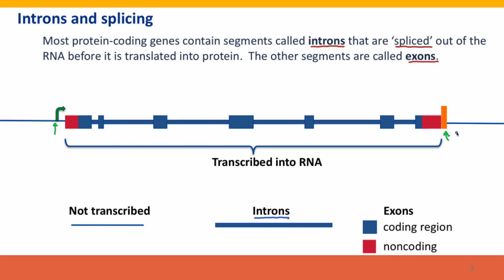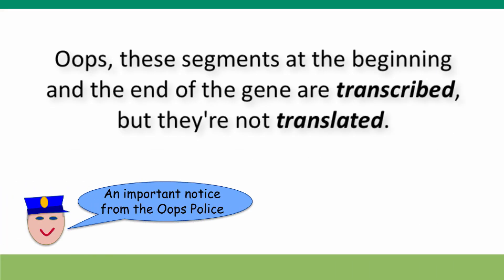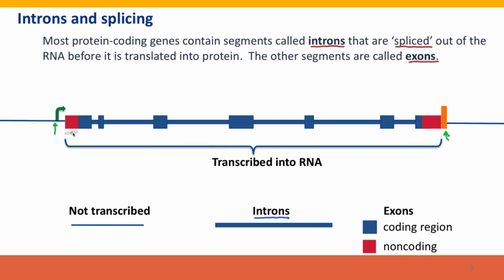There are also two segments at the beginning and at the end that usually are not translated, but are part of the mature messenger RNA. There's a short segment at the beginning which usually includes the ribosome binding site before the start codon, and a short segment at the end which will include the stop codon and a little bit of sequence after it that is not going to be translated.